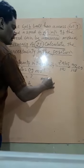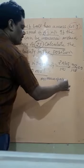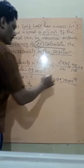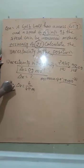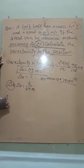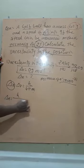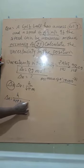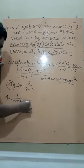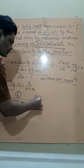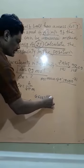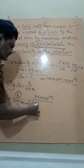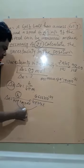You will find here del X is equal to h upon 4 into π into m into del V. What is h? This is Planck's constant 6.626 into 10 to the power minus 34. 4 divided by 4 into the value of π, this is 3.14 into the value of m.